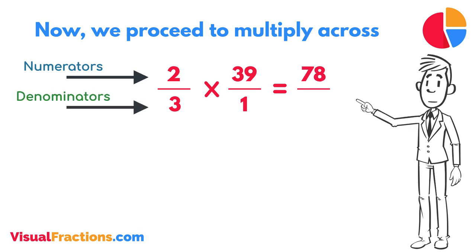Next, multiply the denominators, 1 times 3 equals 3. We now have a new fraction, 78-thirds.